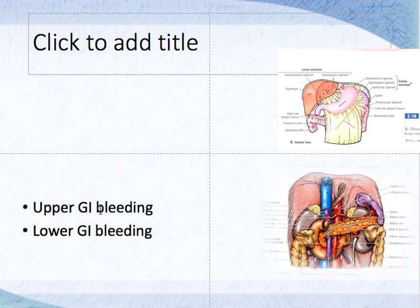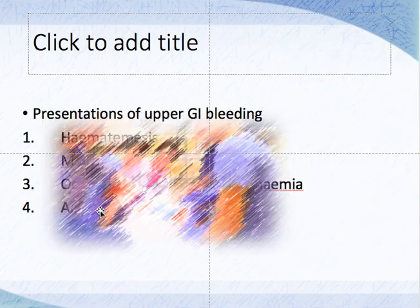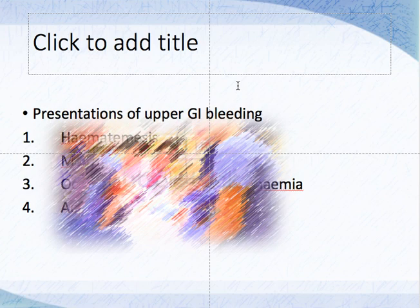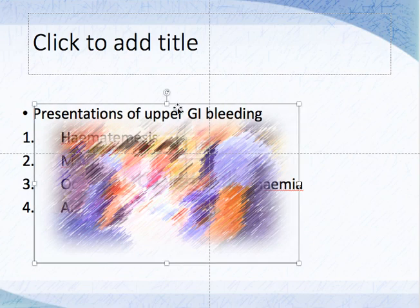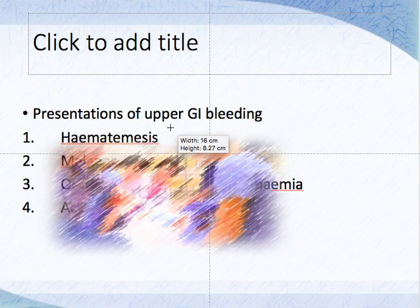Just remember that anything up to the ligament of Treitz we consider as upper GI bleed, and we'll be concentrating on this. Take a piece of paper and a pen and write: if there is bleeding from the upper GI — the esophagus, stomach, or duodenum — how can upper GI bleed present? There are four ways they can present. Pause the video and write them down, then compare with your background knowledge.